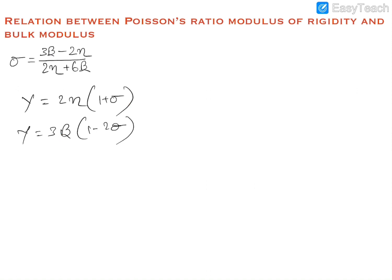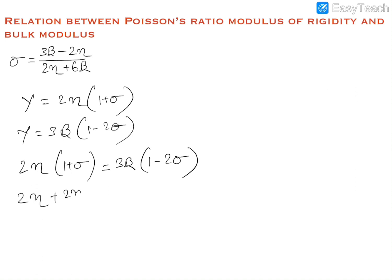So we can equate gamma and write that 2 eta into (1 plus sigma) is equal to 3 beta into (1 minus 2 sigma). Multiplying out these terms: 2 eta plus 2 eta sigma is equal to 3 beta minus 6 beta sigma. So we can rearrange the terms.